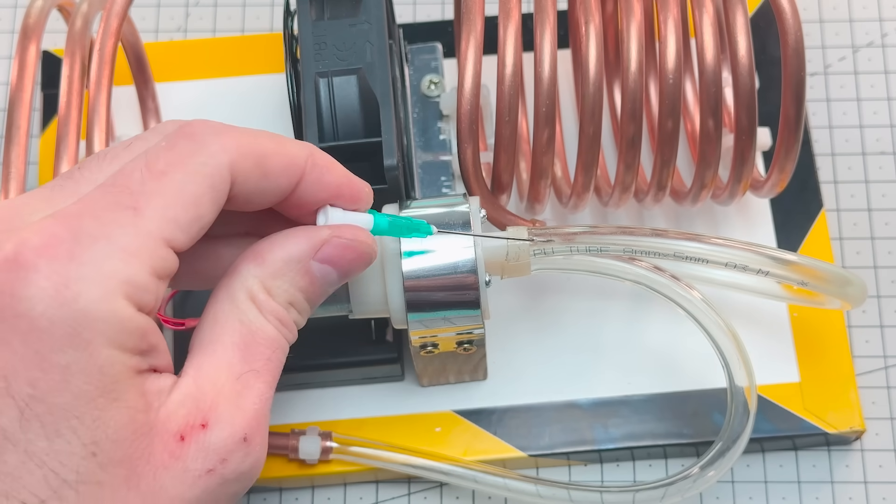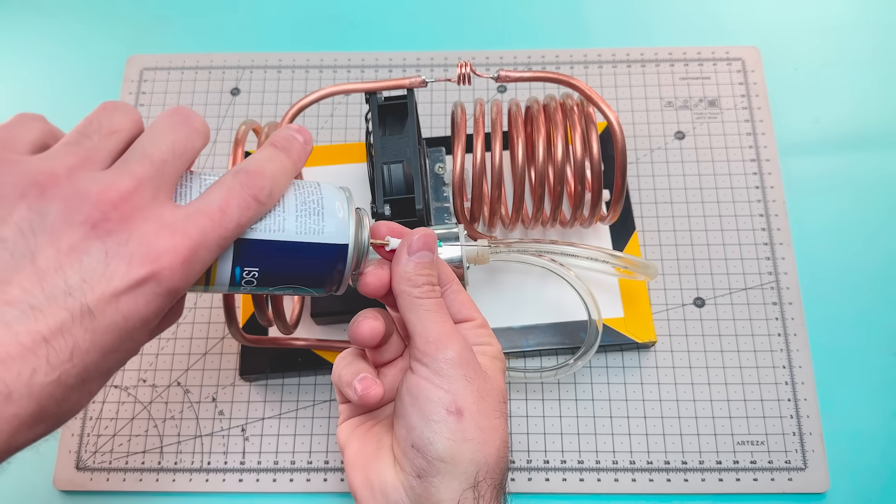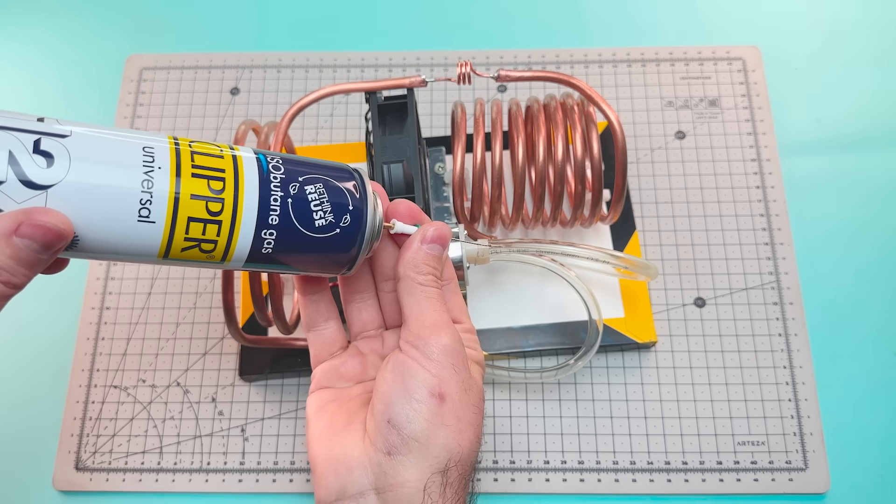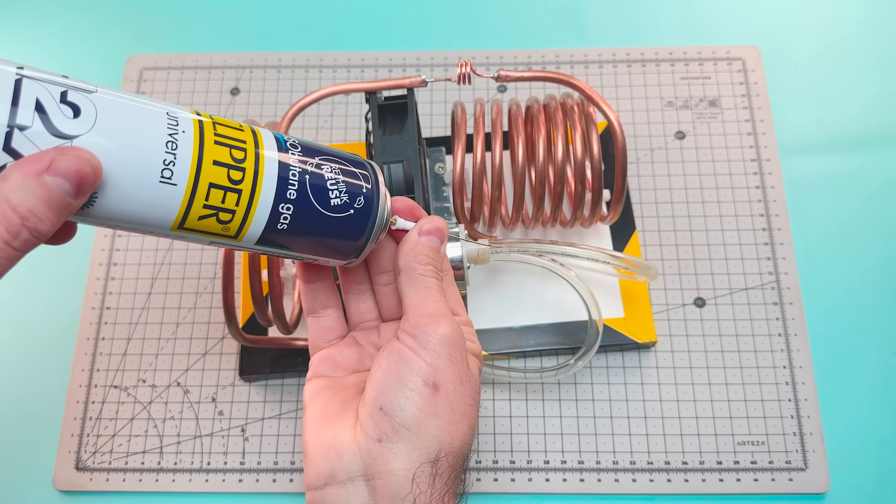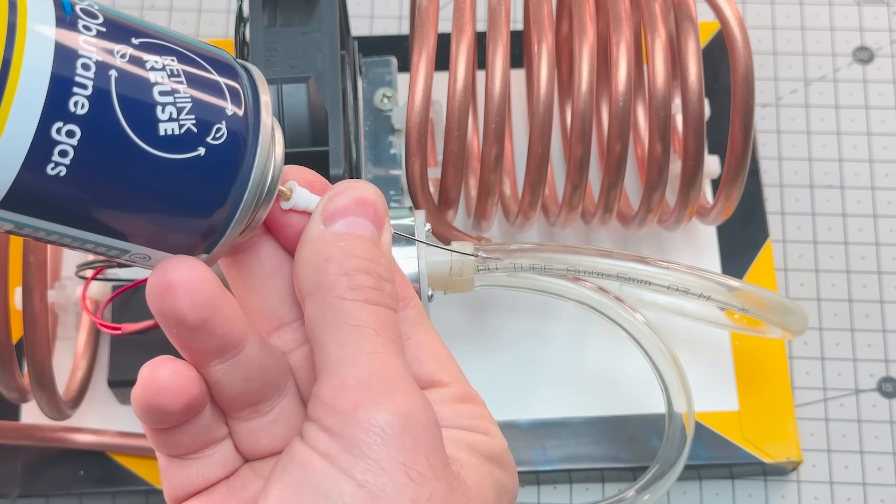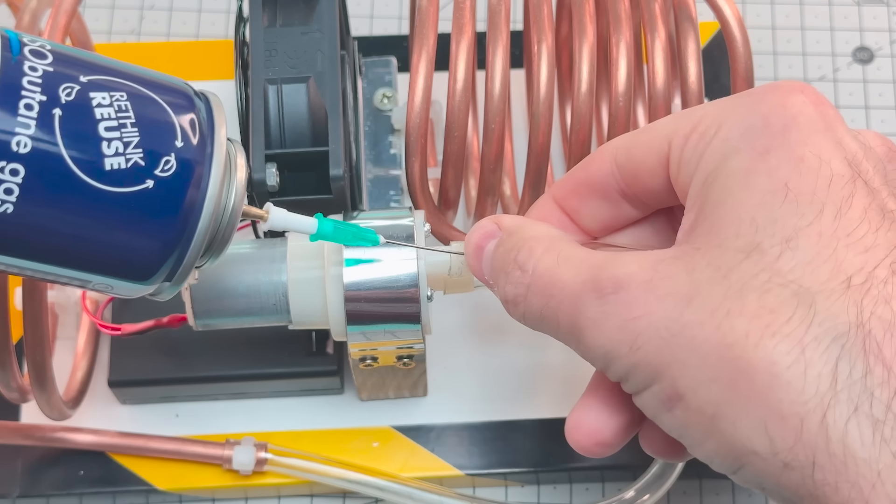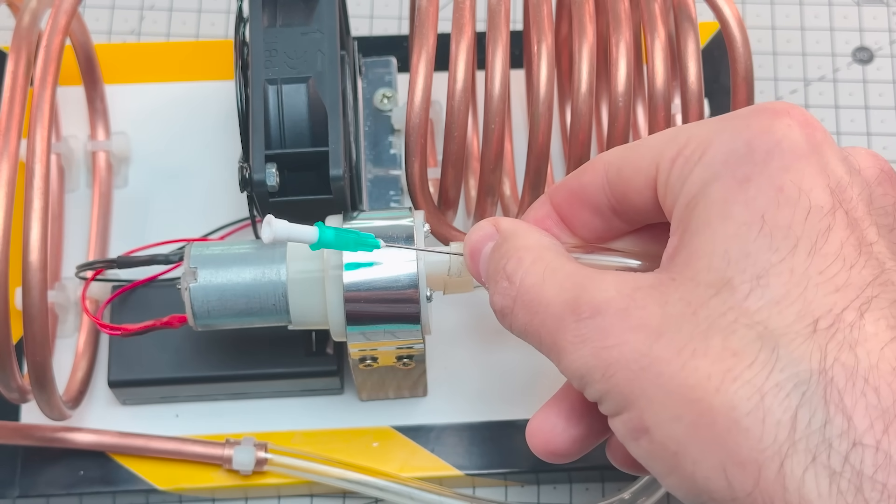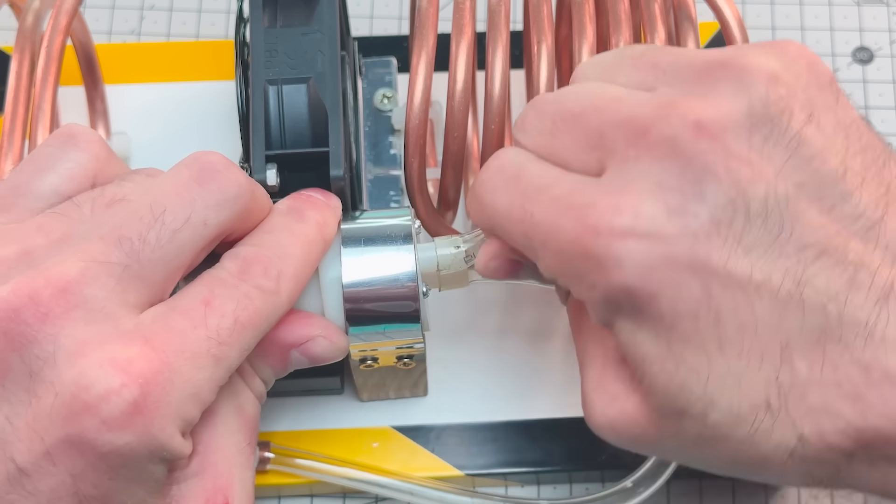As the pressure drops, the isobutane also drops in temperature and evaporates rapidly, cooling the tube through which it passes. This tube, usually made of copper due to its excellent thermal conductivity, acts as the evaporator. If we blow air through it with a fan, that air cools down instantly. But the cycle doesn't end there.